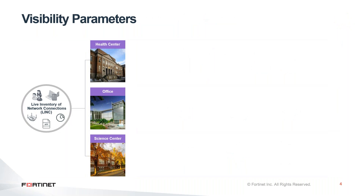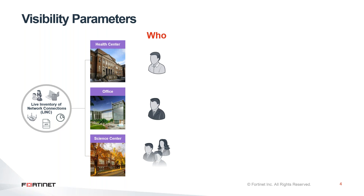The visibility parameters are different parameters we track to know the state of the user and device. Whatever the industry — whether it is healthcare, financial, or a science center — we need to track these parameters to know the state of the users and devices. We keep an eye on these parameters inside a database, like a network connection inventory.